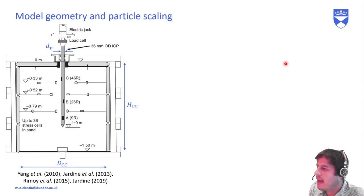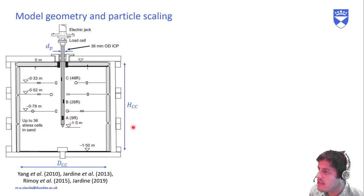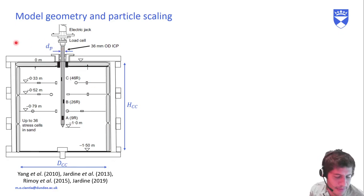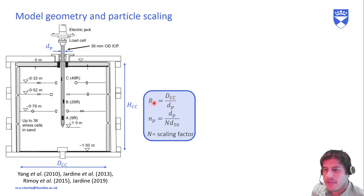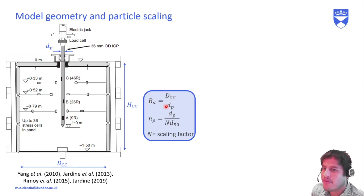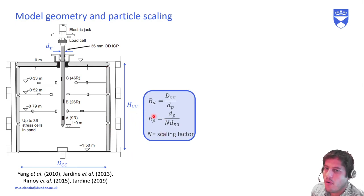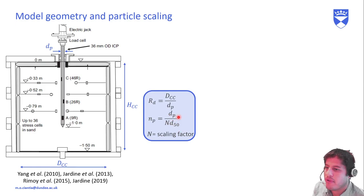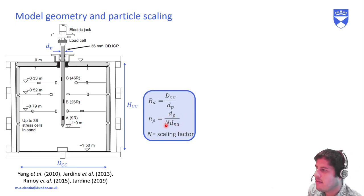Now we have calibrated the sand, so we must fill a big cylinder with spheres and push a cone-shaped pile in. Let me introduce some characteristic dimensions: H_cc is the height of the calibration chamber, D_cc is its diameter, and D_p is the diameter of the pile. We also introduce R_D and N_p as variables describing size effects — R_D is the calibration chamber diameter over the pile diameter (we want a big number to avoid boundary effects), and N_p is the pile diameter over the D50 of the sand (we want a big number to avoid scale effects at the tip).